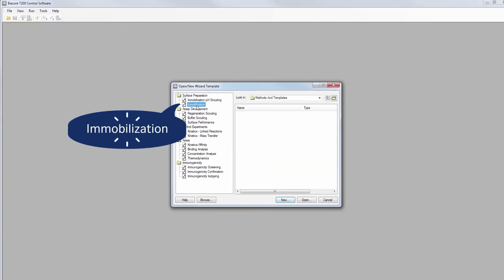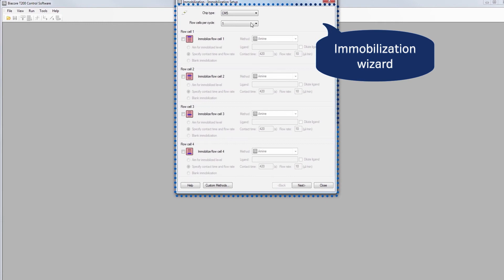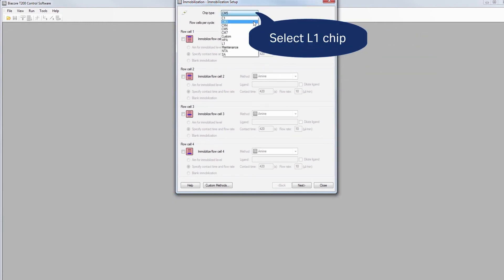Biacore software guides you through the immobilization, step by step. Start by selecting the chip type you want to use. In this case, we're going to use L1 chip.